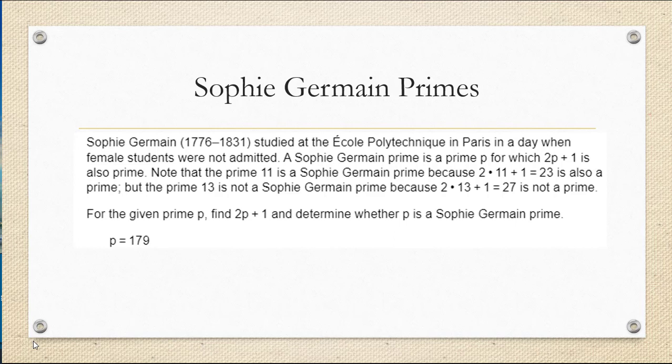Notice that the prime 11 would be a Sophie Germain prime because 2 times 11 plus 1 is 23, which is also a prime. But the prime 13 is not a Sophie Germain prime because 2 times 13 plus 1 is 27, which is not prime.